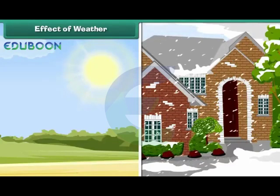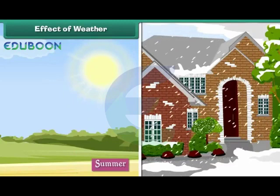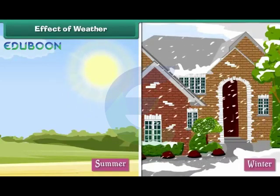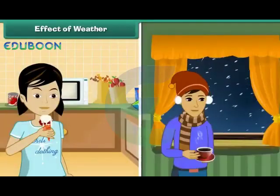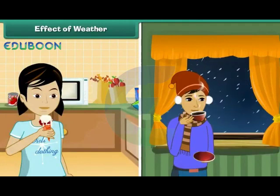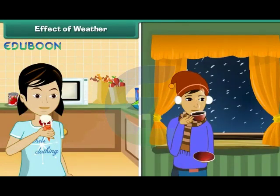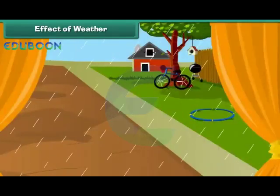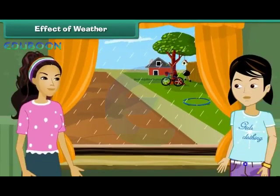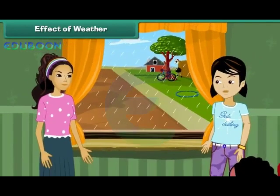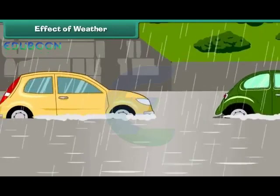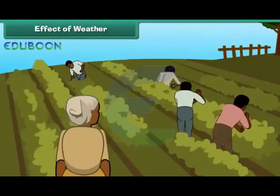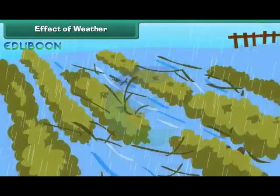Weather affects us in many ways. For example, we wear clothes according to the prevailing weather conditions — we wear cotton in summers, woolens in winters. The food that we eat also changes according to weather; we prefer to eat cold things in summers and hot things in winters. We change our routine according to the changes in weather — when it rains heavily during playtime, we stay indoors. Excessive rainfall causes floods, resulting in loss of life and property. Temperature changes and rainfall affect our crops.